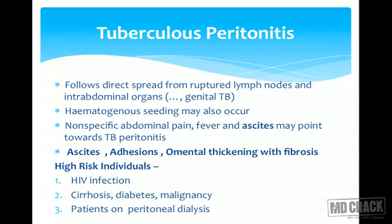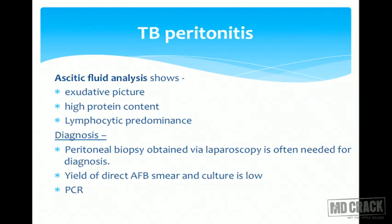Tuberculous peritonitis usually involves direct spread from lymph nodes or other organs including the genitourinary tract in females; hematogenous seeding is also possible. The abdominal pain can be non-specific and generalized, along with fever. Most patients with peritoneal tuberculosis have ascites — infection of the peritoneum leads to ascites formation. There can also be adhesions, omental thickening, and fibrosis. An additional risk factor is patients on peritoneal dialysis. The ascitic fluid is an exudate with high protein, high LDH, lymphocytic cells, and high specific gravity.